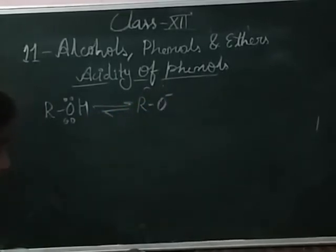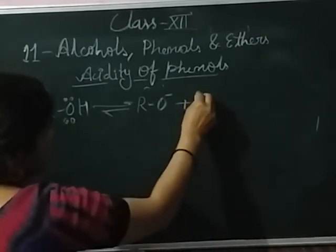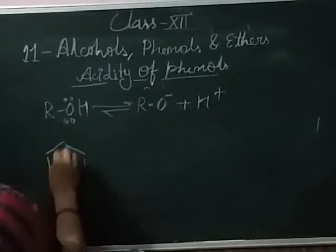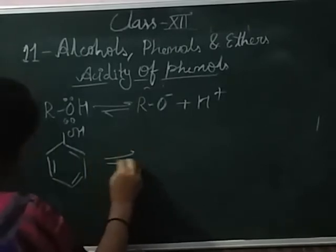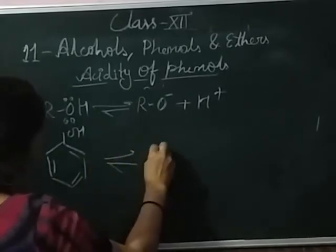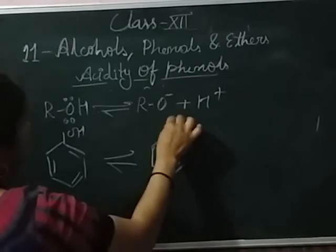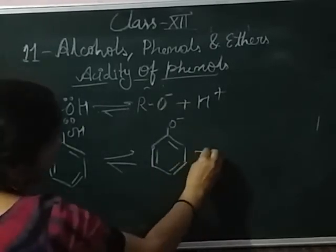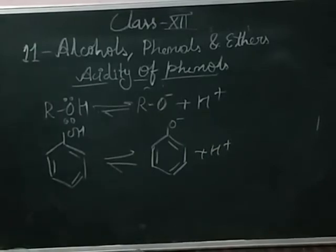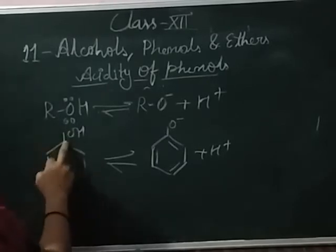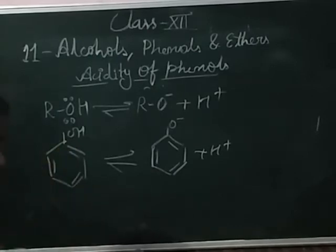In alcohol and phenol, there is a lone electron pair present on the oxygen. Phenol ionizes and forms the phenoxide ion. This phenoxide ion has a negative charge. It also releases the hydrogen ion due to the high electronegativity of the sp2 hybridized carbon of phenol to which the hydroxyl group is attached.